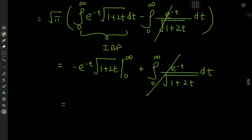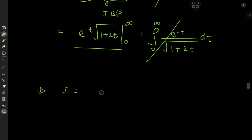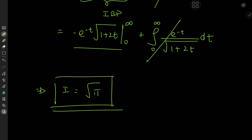All we have to do is evaluate the boundary term. For t going to infinity, the entire term collapses to 0 because of the exponential. For t going to 0, we have e to the 0 which is 1, and with the negative sign canceling, we're left with root 1 times root pi outside — so I equals root pi. This was just a Gaussian hiding in disguise! Anyway, I hope you enjoyed and learned something from the video. Be sure to like and subscribe, drop me a follow on Instagram, and consider supporting me on Patreon. Thank you. See you next time.